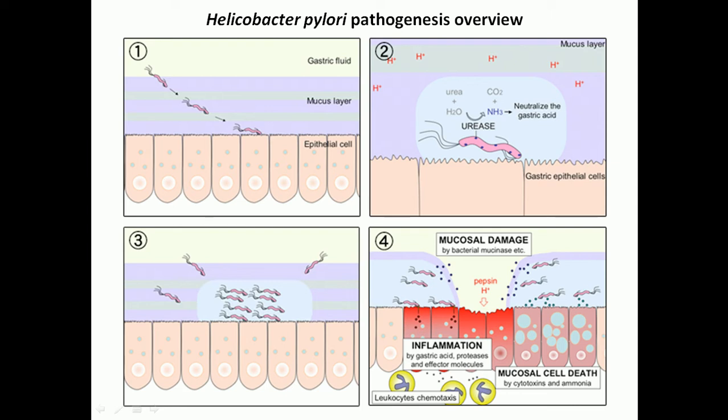Beginning with the first step — attachment of Helicobacter pylori to the surface epithelial cell — the bacteria propels itself using its flagella, migrates through the mucus layer and gastric fluids, and finally reaches the epithelial cell. It adheres to the epithelial cell using a small extension of cytoplasm called fimbriae, and also using another molecule called adhesin, which helps Helicobacter pylori attach to the epithelial cells. Adhesion is the first thing that must occur prior to engulfment of the bacteria.